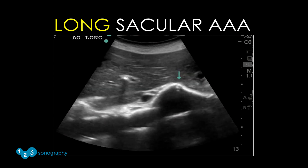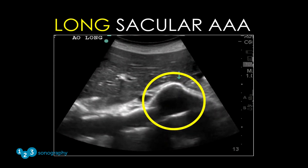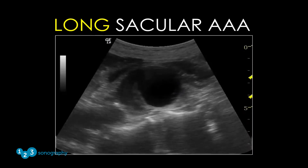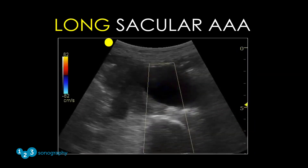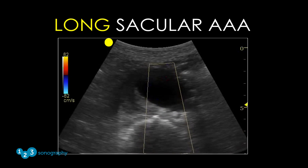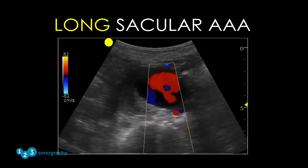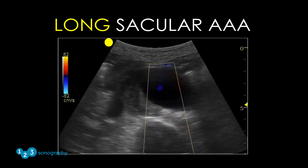This video shows a longitudinal view of a saccular abdominal aortic aneurysm. Here you can see the aorta proximal to the aneurysm and the aorta distal to the aneurysm. When color flow is applied, you can see blood flow within the saccular aneurysm. This can often be important if you are having trouble deciding if this is a vascular structure or a non-vascular cystic lesion.